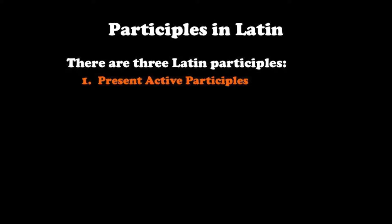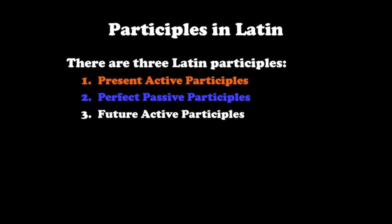Participles in Latin, part 1. There are three kinds of participles in Latin: the present active participle, the perfect passive participle, and the future active participle. The future active participle is extremely uncommon and will not be covered. Participles in Latin part 1 will focus on the present active participle. Part 2 will look at the perfect passive participle, and part 3 will look at some additional issues when translating participles in complete sentences.